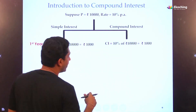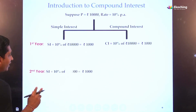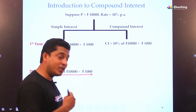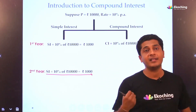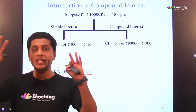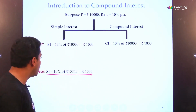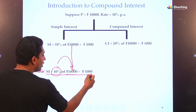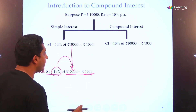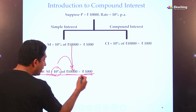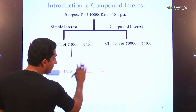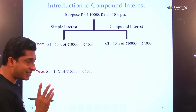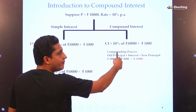Now, what is the problem? In the second year, simple interest remains the same — a very important note from simple interest: principle remains the same each year. So 10% of 10,000 is still 1,000. But before finding the second year's compound interest, there is a compounding process that happens here.